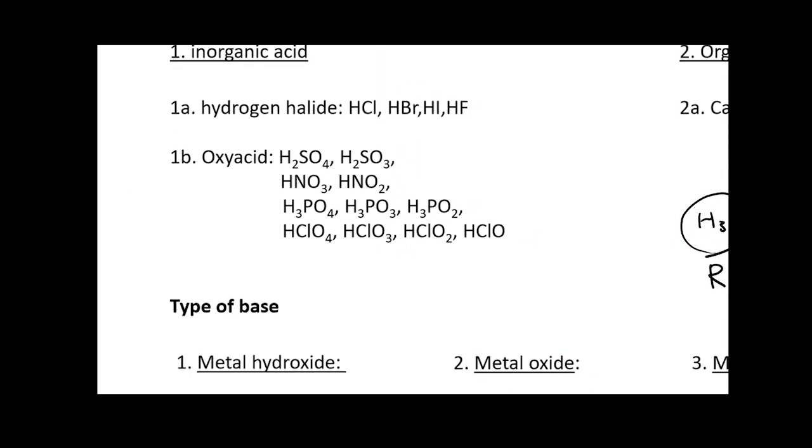Regarding the inorganic acid, you have two types. One is called the hydrogen halide. And this terminology actually explains itself. Basically, your chemical formula contains hydrogen and a halide atom. Everybody know the halide on your periodic table? So if you look at the periodic table, it's actually on the second right of your periodic table. You can see it's F, Cl, Br, I, and At.